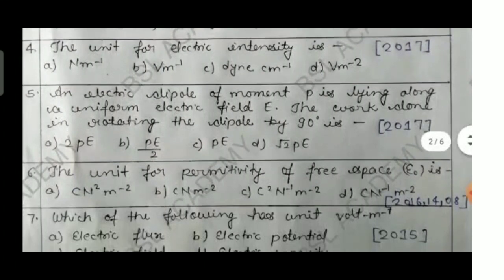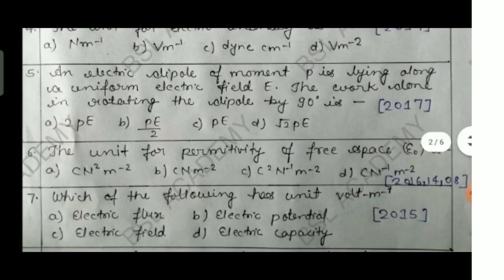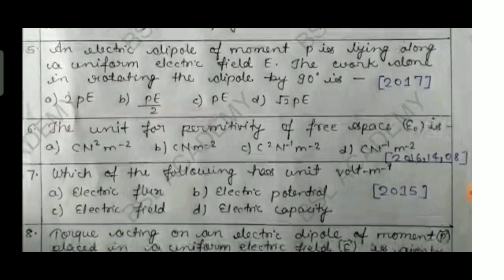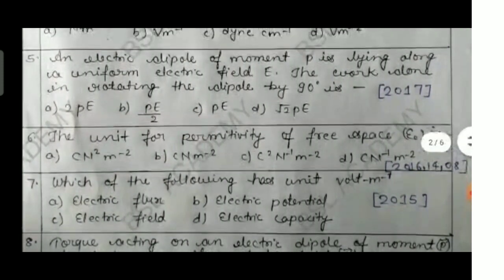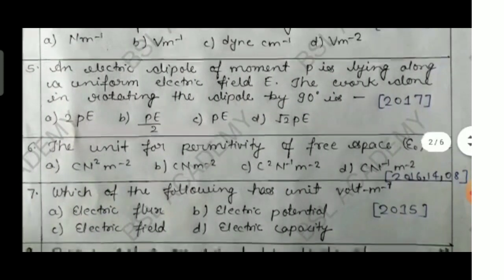Question five: an electric dipole of moment p is lying along a uniform electric field E. The work done in rotating the dipole by 90 degrees is — option A: 2pE, option B: pE/2, option C: pE, option D: √2·pE, where p is the dipole moment and E is the electric field intensity. This was asked in 2017.